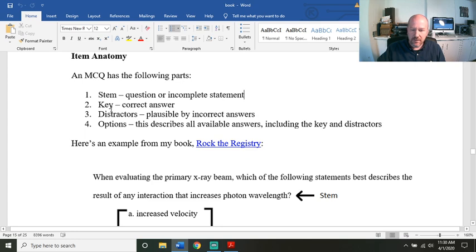They have a stem. They have a key, and that's what the ARRT calls the correct answer. There's distractors, always three of them, for a total of four options, a key and three distractors.